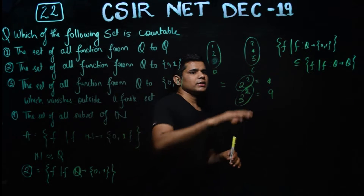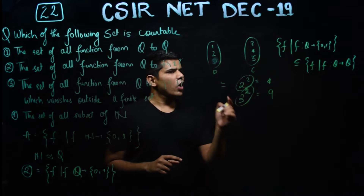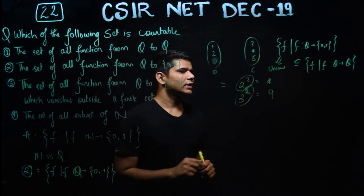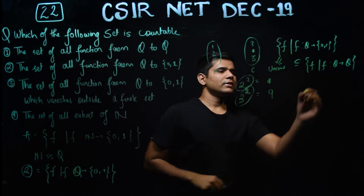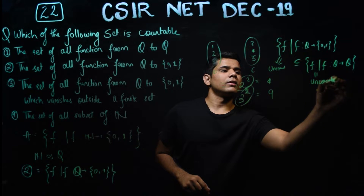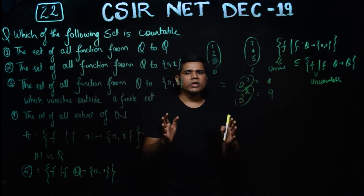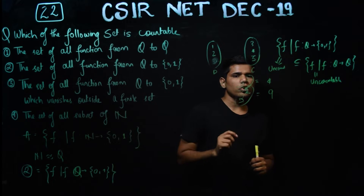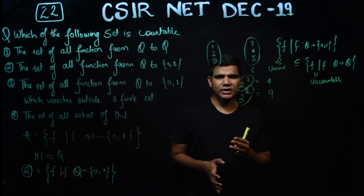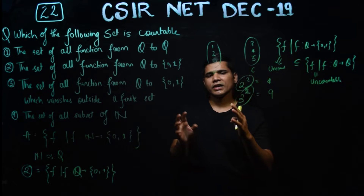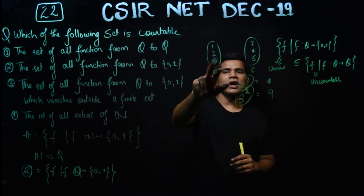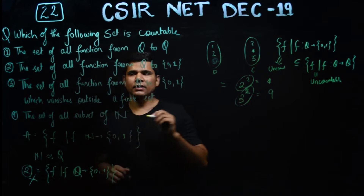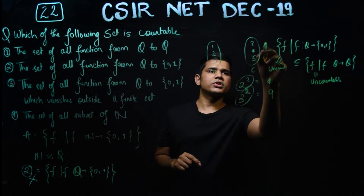The set of functions from Q to {0,1} is actually a subset of the set of all functions from Q to Q. Since the subset is already uncountable, the superset is also uncountable. So option 2 is incorrect and option 1 is also incorrect.